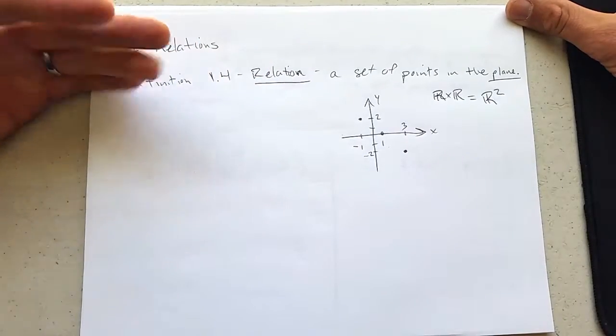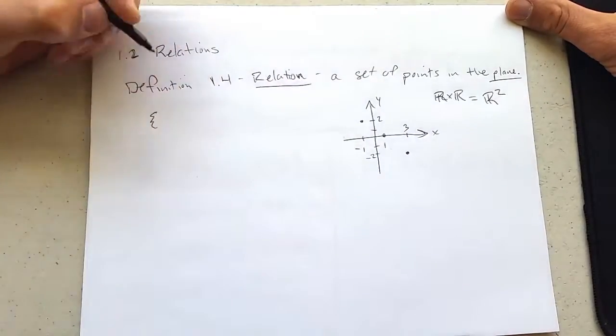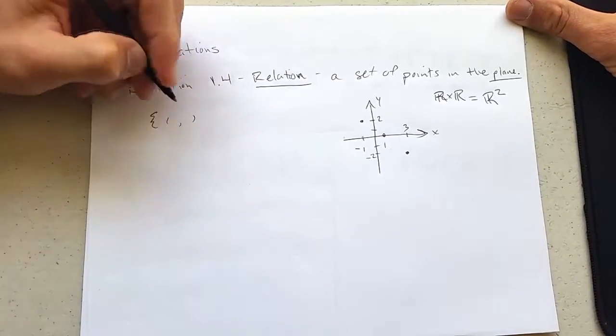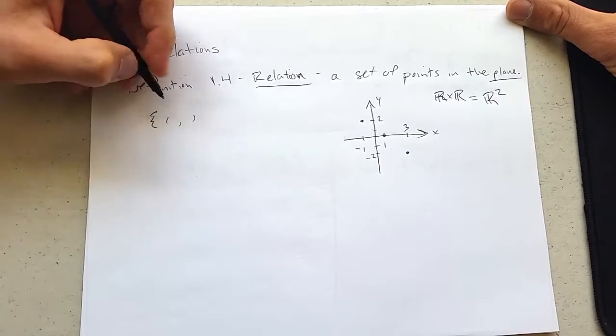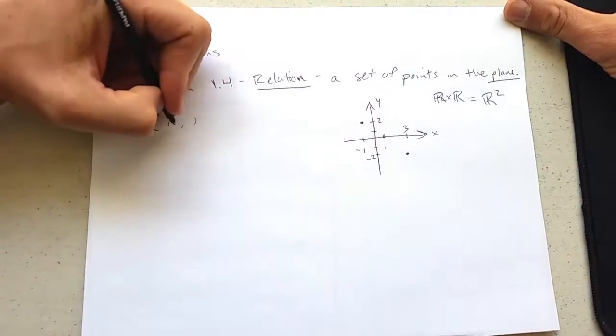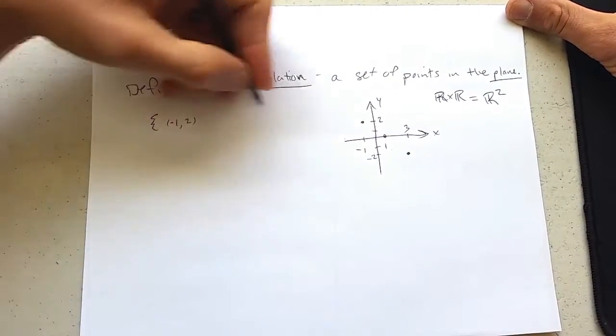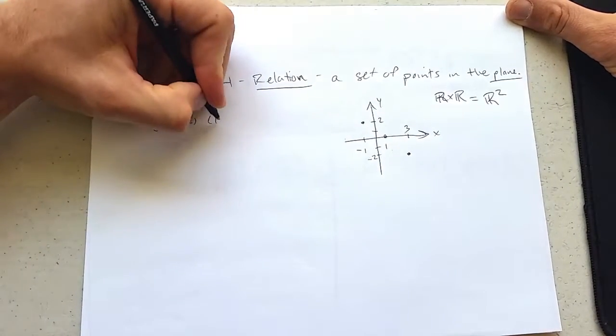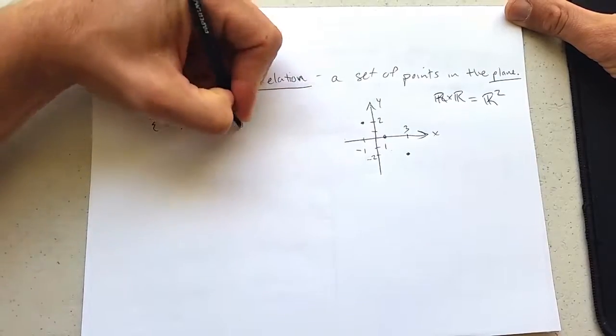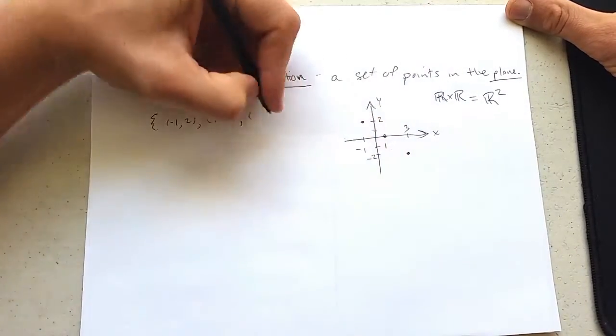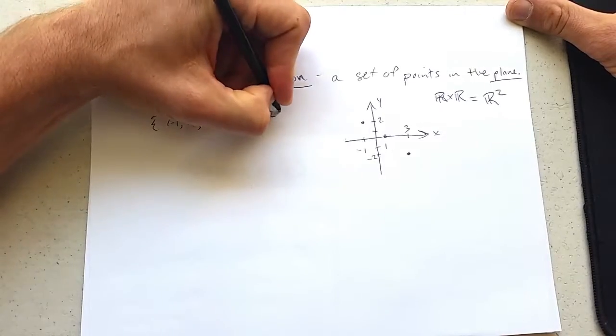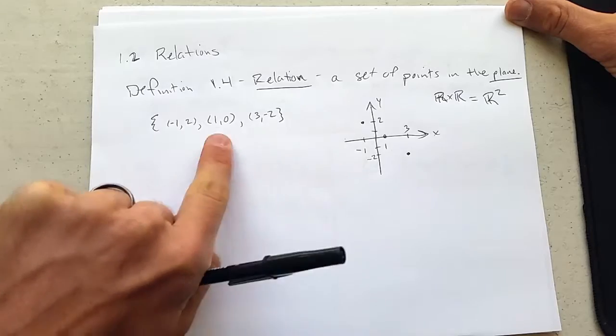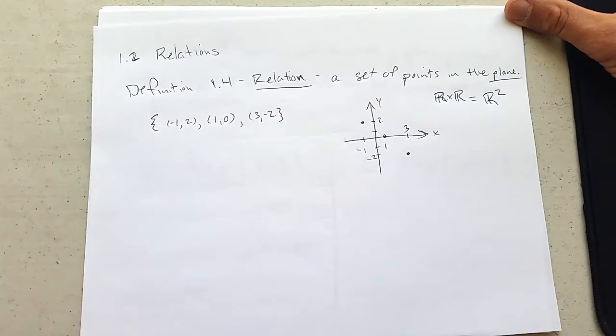How do we represent this in set notation? So we're going to start the same way as before, squiggle brackets. Now we're going to have some points in here, so these are not individual numbers. These are going to be points, and we'll just go left to right. Negative one, two. That's the first point. The next point, one, zero. And the last point will be three, negative two. So this is the same relation as this, just represented in set notation and on a graph.